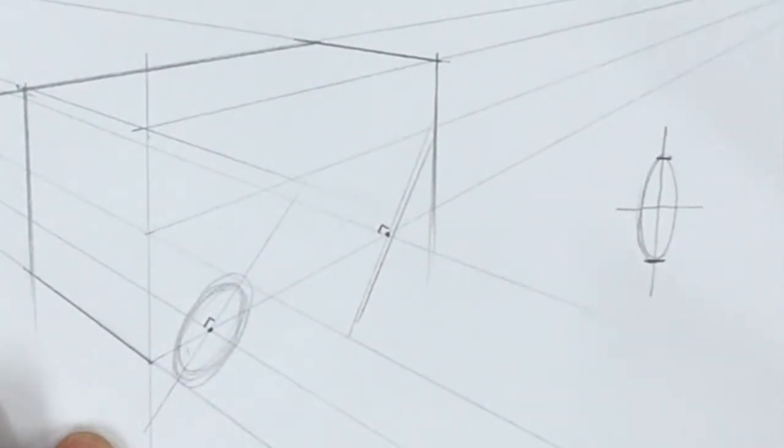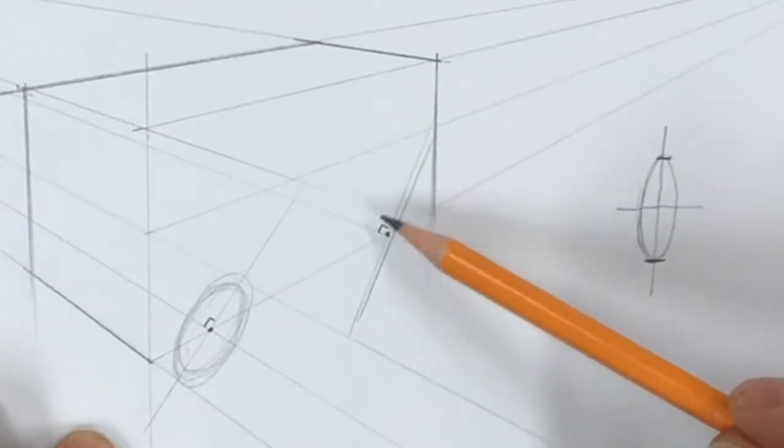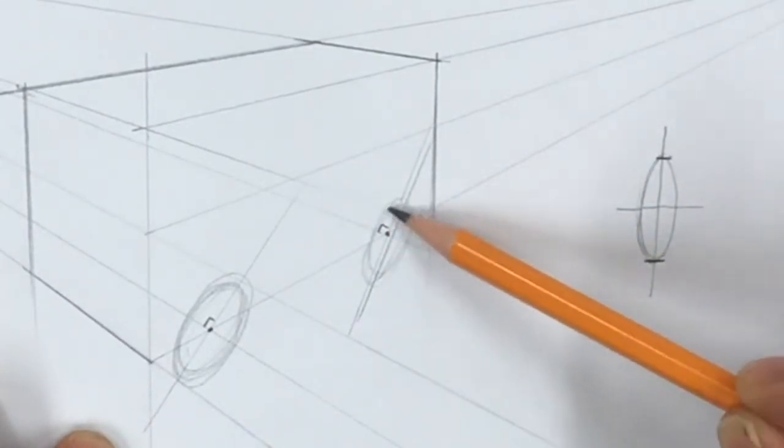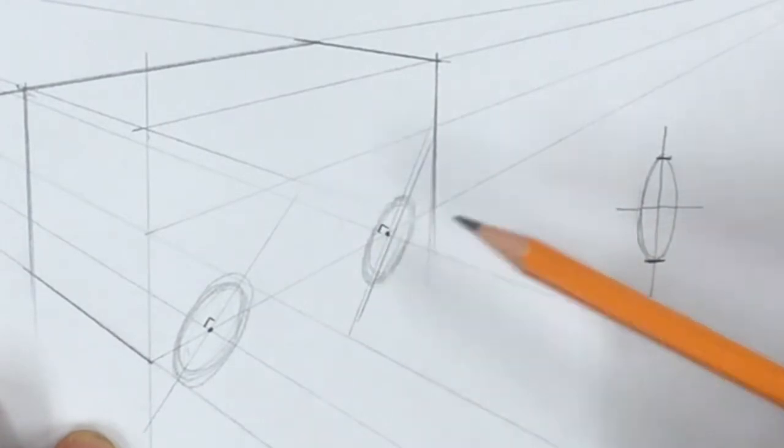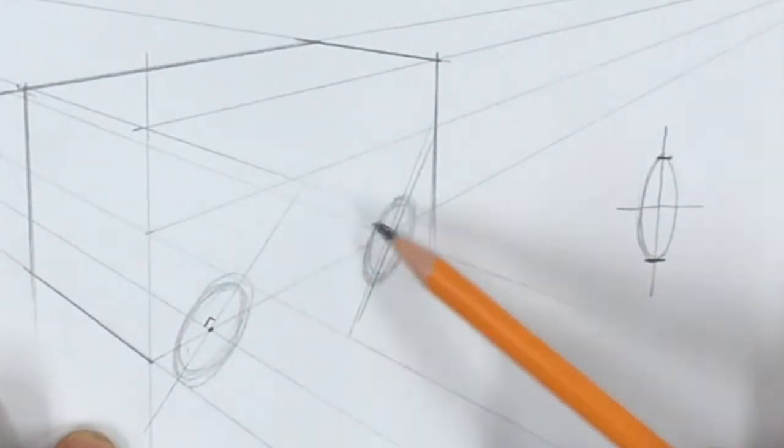On the other one it's going to be a slightly different angle and a little smaller because it's further away because of the perspective. You can see now that I've got that pretty well nailed. So that is the two wheels of my vehicle.